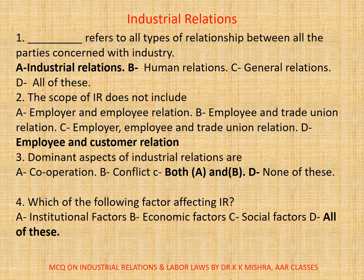Question 2: The scope of Industrial Relations does not include. Correct option is D. Employee and Customer Relations. Question 3: Dominant aspects of Industrial Relations are A. Cooperation. B. Conflict. C. Both A and B. D. None. Correct option is C. Both A and B.